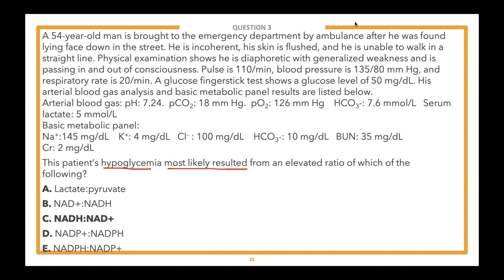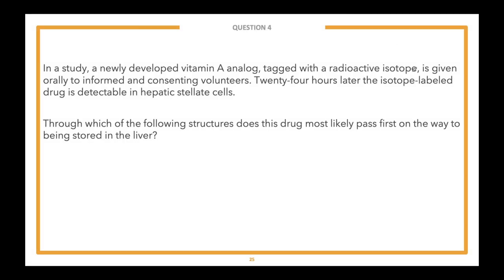Sorry about unveiling that answer choice prematurely, but hopefully you learned from it. This is a very challenging question because many people would select A — lactate to pyruvate — since that ratio is also elevated, but it's not the most likely answer based on the lead-in. This is where your question dissection skills really come in handy. Let's move on to our last question of the evening, and remember we have a raffle at the end.